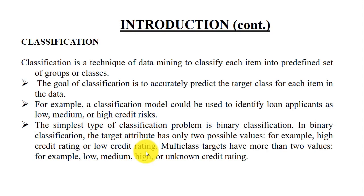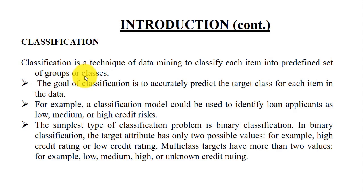After that, classification. Classification is a data mining technique used to classify each instance into a predefined set of classes. In the case of sentiment analysis, we have two or three class labels: positive sentiment, negative sentiment, and neutral sentiment. The goal of classification is to accurately predict the target class for each item in the data — in our case, for each movie review.